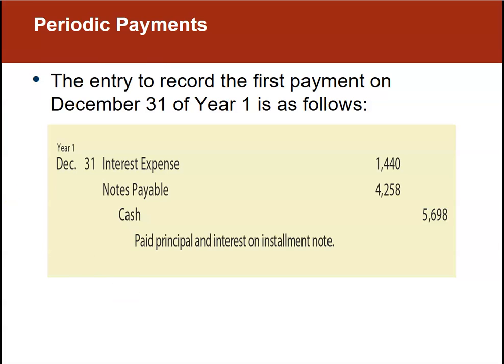The way this example works is one payment per year. The entry to record the first payment on December 31st: cash is going out, so we credit cash for $5,698. We're going to have two debits — we reduce the liability notes payable by the principal portion, $4,258, and then interest expense of $1,440 goes to the other income and expense section of the income statement, negatively impacting net income.